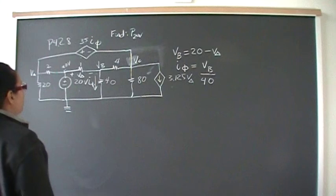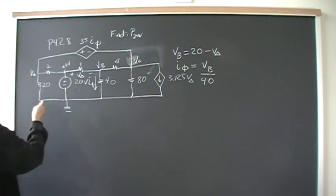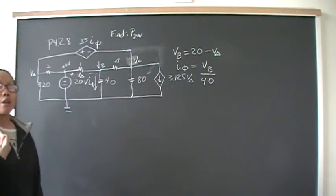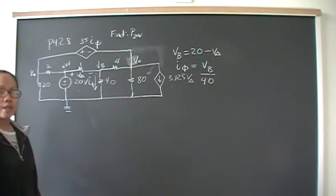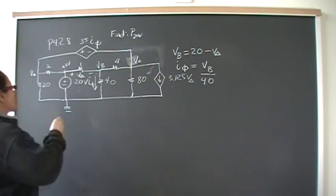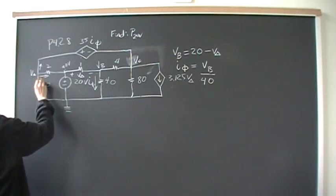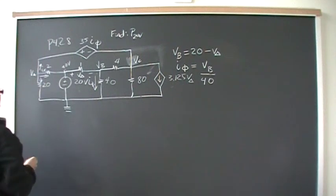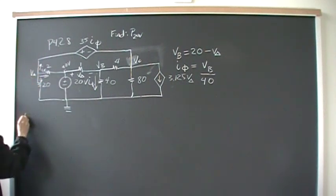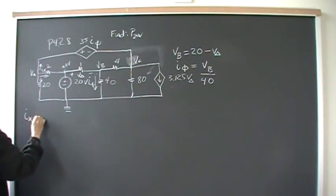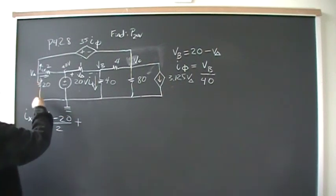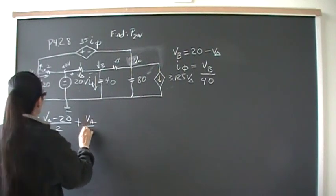The second constraint equation is going to come from the current through the 40-ohm resistor. I sub phi is going to be VB over 40. Now let's start writing the KCL equations. Node voltage equations are an application of KCL — the sum of the currents leaving a node equals zero. I don't know what that current through the voltage source is, so I'm just going to call it I sub x. The equation at this node is: I sub x plus VA minus 20 over 2, plus VA over 20, equals zero.